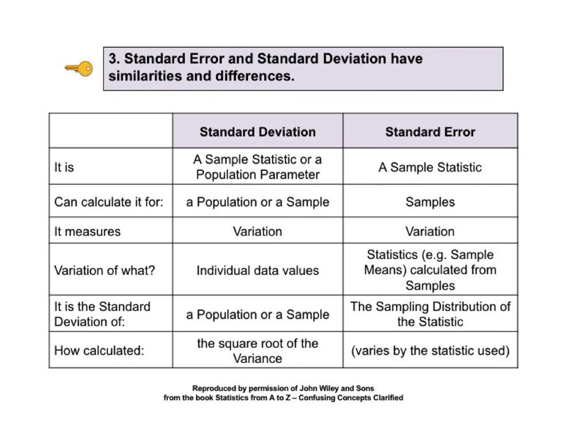In this table, consider the word population to represent both population or process. Standard deviation can be calculated using the data in a sample or a population, while standard error is only calculated for a sample.